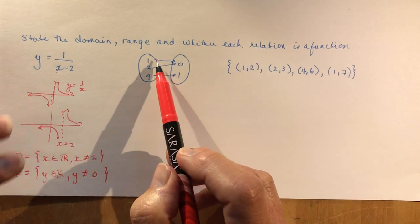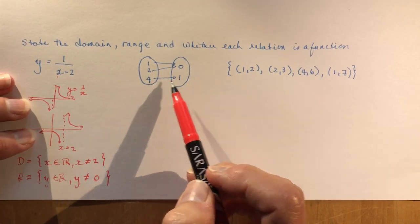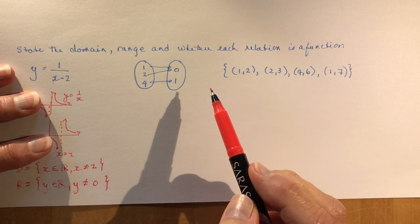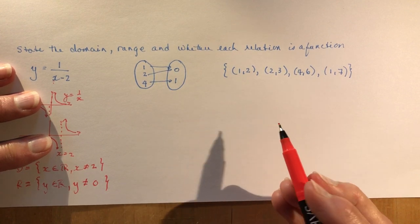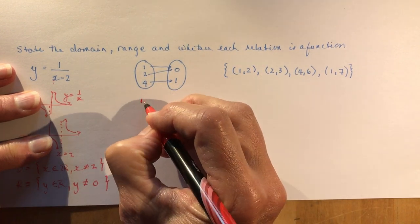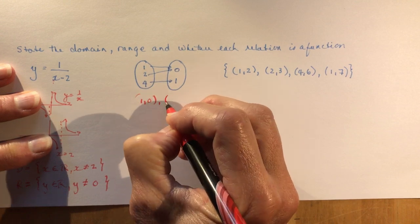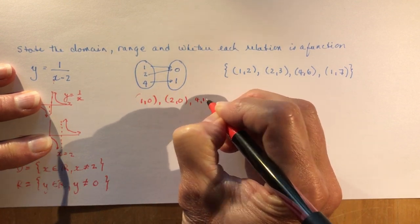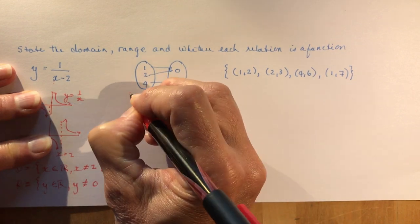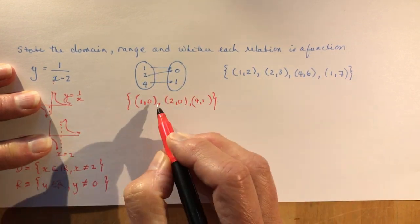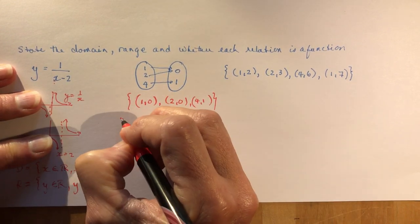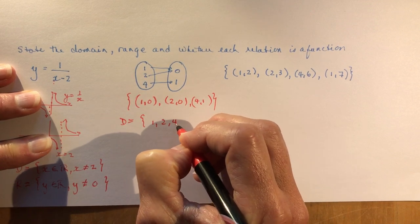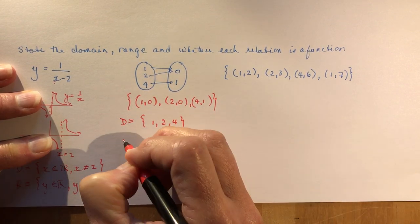Is this relation a function? One zero, two zero, four one. Do you see any repetitions here of the x having two values for y? No. So if I wrote them out, you'd have this one zero, two zero, four one. So every value for x has one value for y. So the domain, you're just going to write one two four. That's it. That's all you have to do.